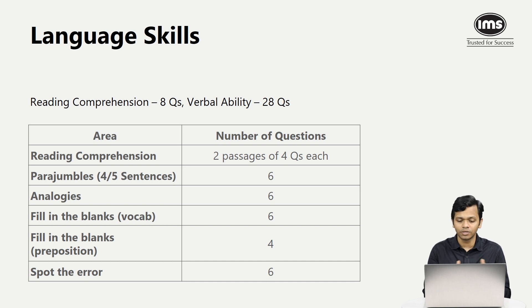Spotting the error, which is essentially grammar, there were six questions based on this. Regarding the overall difficulty of the language skills section, it was very similar to what it has been in the last few years, and that is why the cutoff won't change too much.